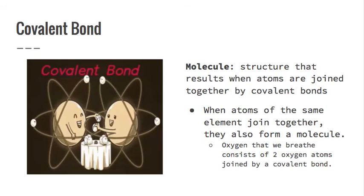Covalent bonds make up molecules, and a molecule is a structure that results when atoms are joined together with a covalent bond. When atoms of the same element join together, it is also called a molecule. For example, the oxygen you breathe in isn't just plain O — it's actually two molecules of oxygen covalently bound to one another, and we still call that a molecule. So you breathe in molecules of oxygen rather than just the single element oxygen.